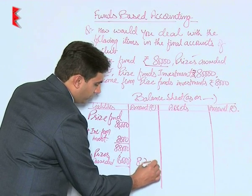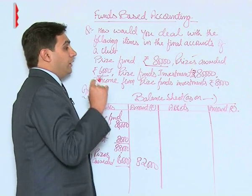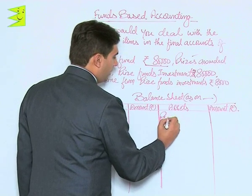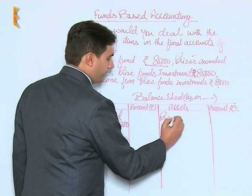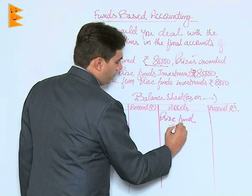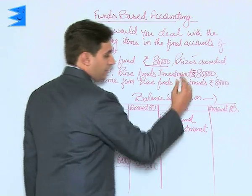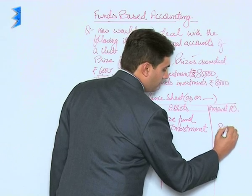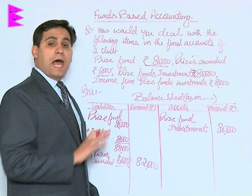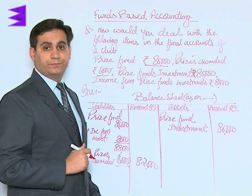During the year, we have used this fund to the extent of rupees 6,000, so minus prizes awarded — rupees 6,000 — deducted, we will have a balance of rupees 82,000 in the prize fund for this year. Then, regarding investments — there is no mention of fresh investments made — so prize fund investments would appear on the asset side as rupees 80,000. There will be no change in the investments as there is no mention of any investment being made during the year.